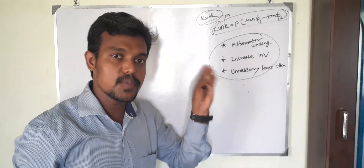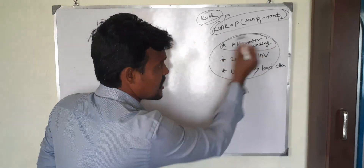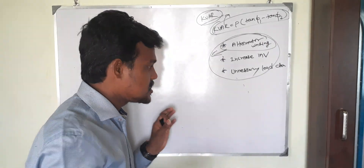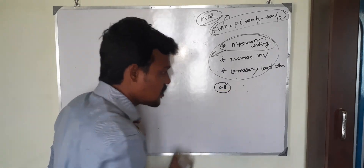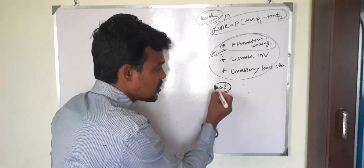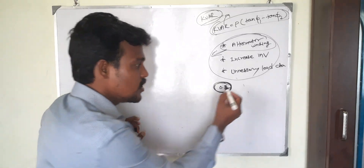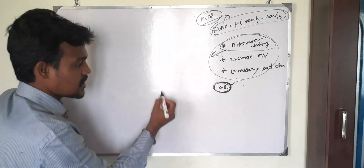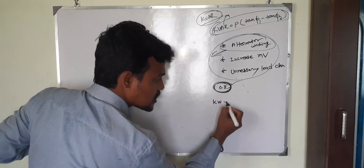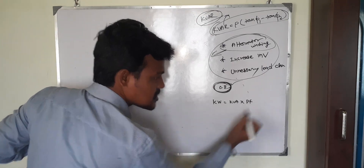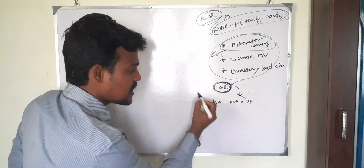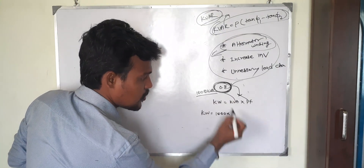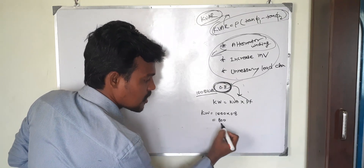I will explain why the alternator winding gets damaged. If you look at the nameplate of your DG, the power factor listed is 0.8. This means the DG is always designed at 0.8 power factor. The full load of that DG is designed with respect to 0.8 power factor. The formula is: kilowatts = kVA × power factor.